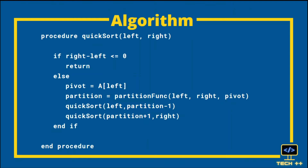The Quicksort function accepts two parameters: the leftmost position of the array and the rightmost position of the array. Next, we check if the difference between the right and left position is less than or equal to 0. If the condition is true, we will stop execution. If not, we set the leftmost element of the array as pivot. Next, we partition the array into two parts.